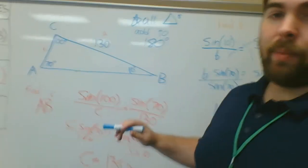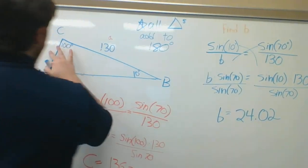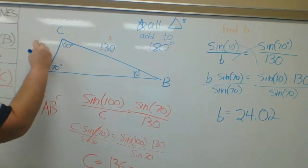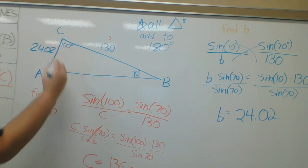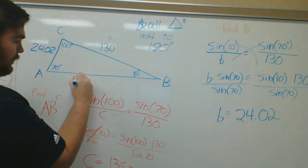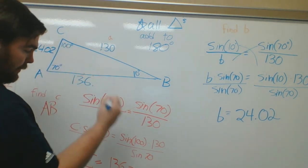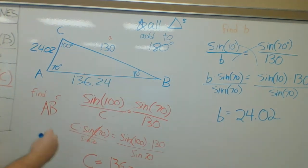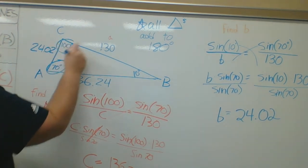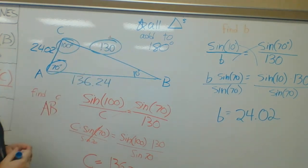So, 24.02. That means this is 24.02. That means I pretty much solved the triangle. I know every side length, every angle, when I only started with this, this, and this.